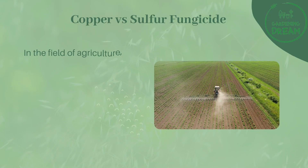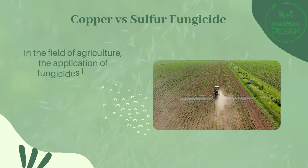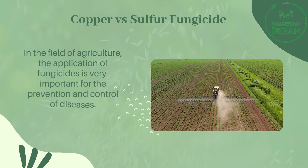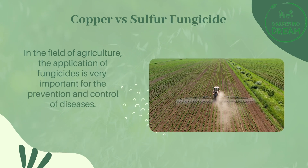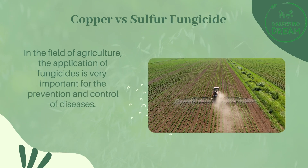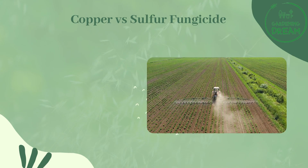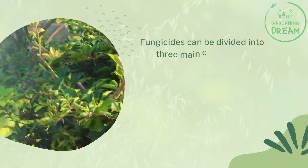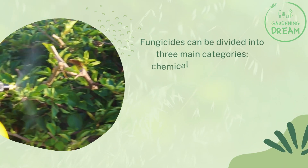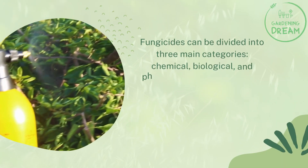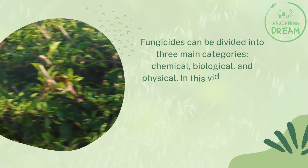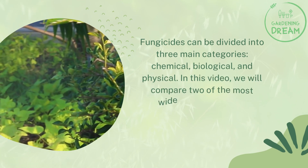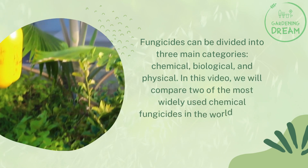In the field of agriculture, the application of fungicides is very important for the prevention and control of diseases. Fungicides can be divided into three main categories: chemical, biological, and physical. In this video we will compare two of the most widely used chemical fungicides in the world: copper versus sulfur fungicides.